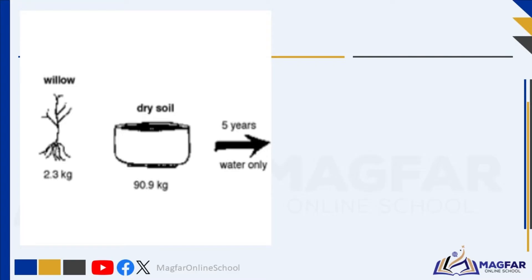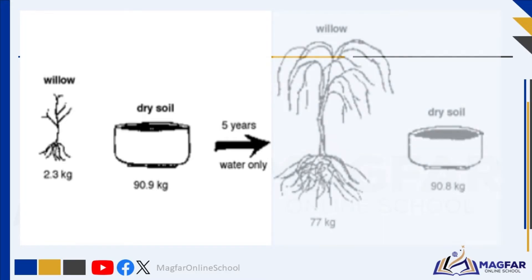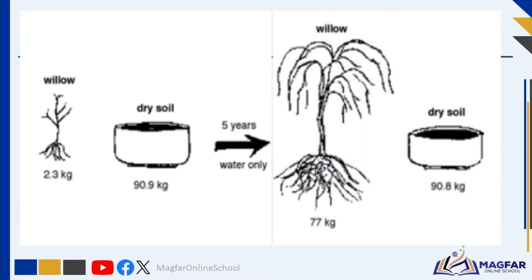He weighed a small willow tree and it was 2.3 kg. He put the willow tree in a pot that had dry soil weighing 90.9 kg. After planting the tree, he watered it with rain water each week. This continued for five years. After the five years, he removed the tree from the pot and weighed it. He also dried the soil in the pot and weighed it. The tree was now 77 kg, and the soil was 90.8 kg.